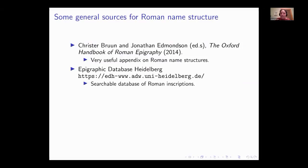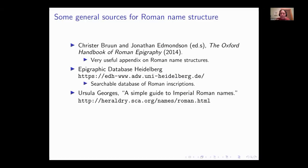Something I used a lot when preparing this class is the Epigraphic Database Heidelberg. It has a database you can search either generally by keyword or by name type to find Roman inscriptions — I used that to pull many of the name examples I'm going to show you. This is the complex names class; if you want a nice list of name elements to pull from, I've written an article called the 'simple guide,' available on the heraldry.sca.org website.